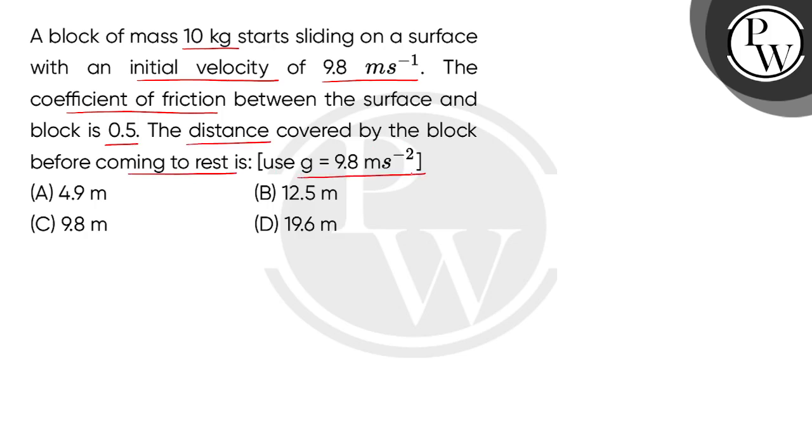Use g equal to 9.8 meter per second squared. We have given a block of mass 10 kg and the initial velocity of 9.8 meter per second. The coefficient of static friction is 0.5 and the final speed of this block is 0. We have to find the distance covered before coming to rest.